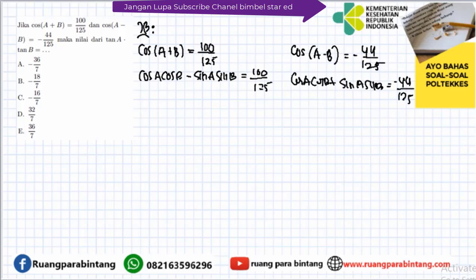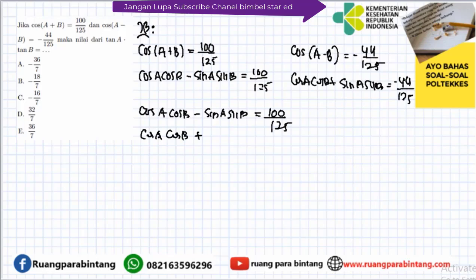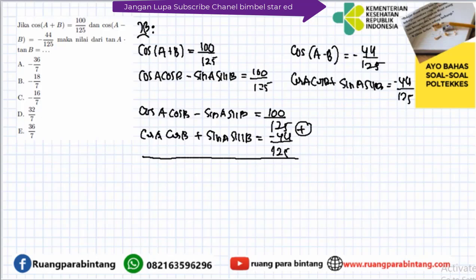Jadi kalau kita eliminasi: cos A cos B - sin A sin B = 100/125, dan cos A cos B + sin A sin B = -44/125. Kalau kita jumlahkan, maka sinusnya habis. Maka ini menjadi 2 cos A cos B sama dengan 100 + (-44) = 56/125. Dari sini bisa kita peroleh cos A cos B = 56/2 = 28/125.